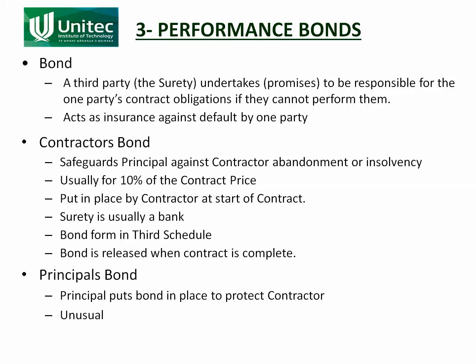The bond isn't paid to the principal straight away. It's only paid to the principal if the contractor doesn't carry out his obligations. So it's sitting in the surety's bank, and they're saying: if something goes wrong and the contractor cannot do it, then we will pay for it. It's a promise by the surety.